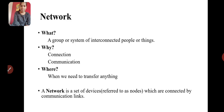So what is a network? A network means a group or system of interconnected people or things — devices that are connected, with information exchanged between them.